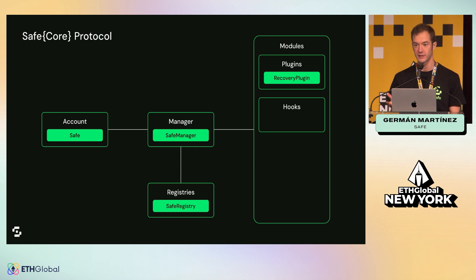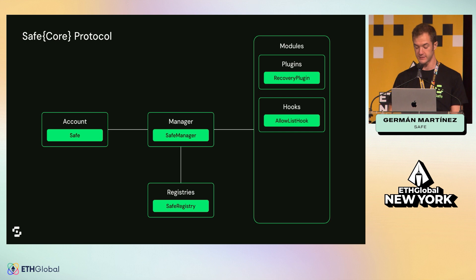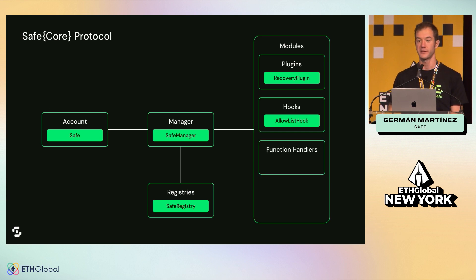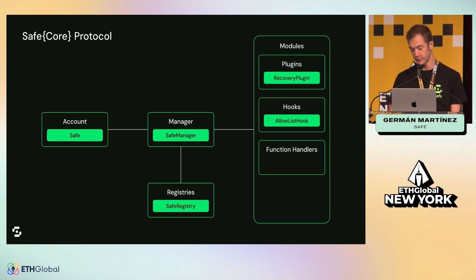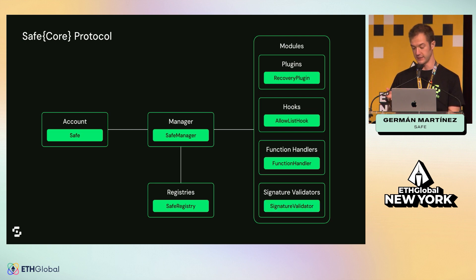The same applies to hooks — hooks are very similar to the transaction guards we have. For example, we can have an allow list hook. They also work with the manager and can be added to registries. We also have function handlers, which work very similarly to the fallback handler. We also have signature validators, and in the future many more kinds of modules can exist.